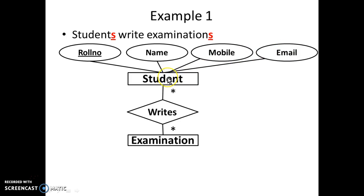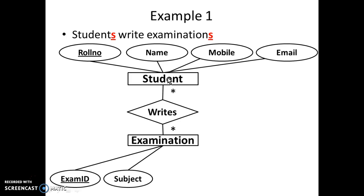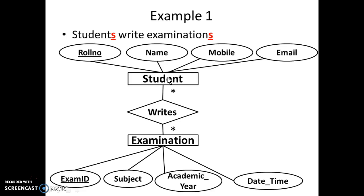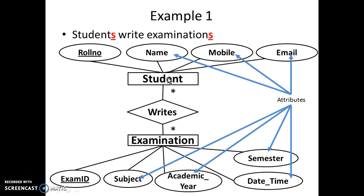For examination, exam ID and subject can be attributes, academic year, date-time, and semester of examination can also be attributes. These are the attributes: name, mobile, email, subject, academic year, semester, and date-time. Roll number and exam ID are specifically key attributes — you can see they are underlined. Key attributes represent primary keys inside the physical database.